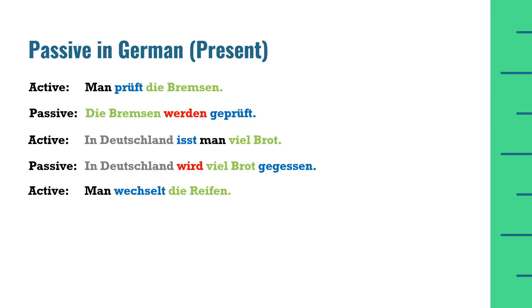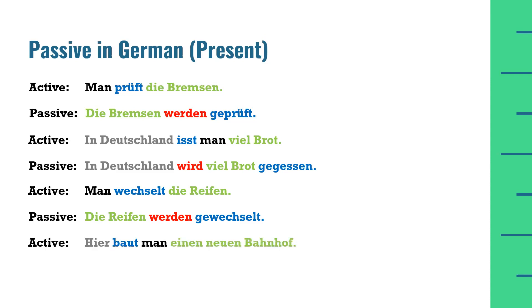Active: 'Man wechselt die Reifen' — bande ko tires badalne chahiye. 'Wechseln' ka matlab hai tabdeel karna, 'die Reifen' matlab tires hain. Ye again plural noun hai. Passive: 'Die Reifen werden gewechselt'. Active mein 'man' use hua tha is liye passive mein 'von' ko use nahi karna. Aakhri position par participle 'gewechselt'.